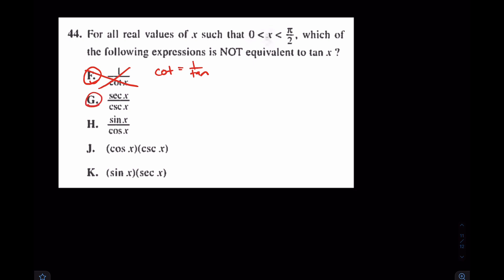Well, secant is 1 over cosine over 1 over sine. Again, secant is 1 over cosine, cosecant is 1 over sine. And again, that's a keep, change, flip, right? So that'll become 1 over cosine times sine over 1, which becomes sine over cosine. And like we said earlier, that is tangent. That is wrong. We're trying to find what isn't equal to tangent.